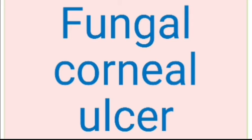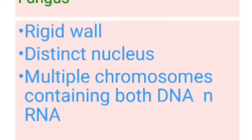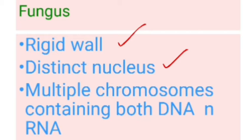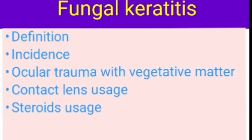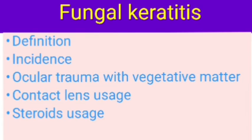This group of diseases are corneal infections caused by fungus. It can be fungal keratitis where there is inflammation of the cornea, or fungal corneal ulcer where there is an epithelial defect associated with inflammation. These fungi are microorganisms with a rigid wall, a distinct nucleus, and multiple chromosomes containing both DNA and RNA. Fungal keratitis is a significant cause of ocular morbidity and unilateral blindness if not treated.